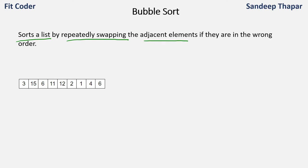Let's take an example. We are given this input array. Bubble sort works in iterations. In the first iteration, it will swap all the adjacent elements if they are in the wrong order. So let's compare the first two elements: 3 and 15. Since 3 is less than 15 and we are sorting in increasing order, these two elements are in the correct order. Then we compare 15 and 6. Since 6 is less than 15, we need to swap them. So 3, 6, and 15.